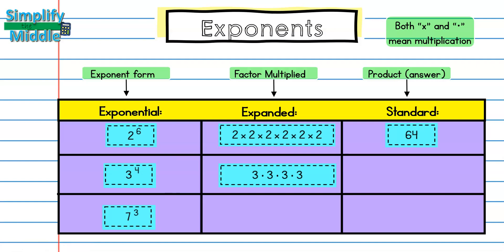To find my standard form, I'm going to multiply 3 times 3, which is 9, times 3 is 27, times 3 is 81. And so we end up with a standard form of 81.